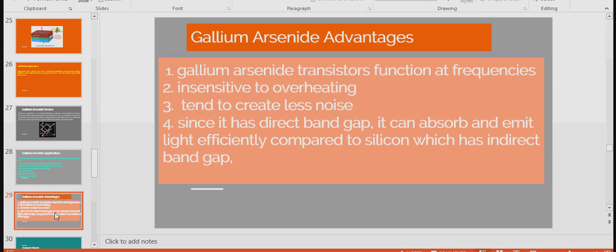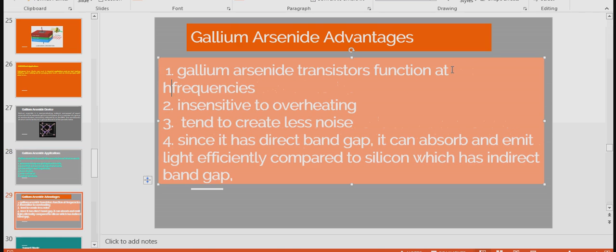What are the advantages of Gallium Arsenide compared to Silicon? Gallium Arsenide Transistors function at high frequencies, solar cells are insensitive to overheating, tend to create less noise. Since it has direct band gap, it can absorb and emit light efficiently compared to Silicon which has indirect band gap.